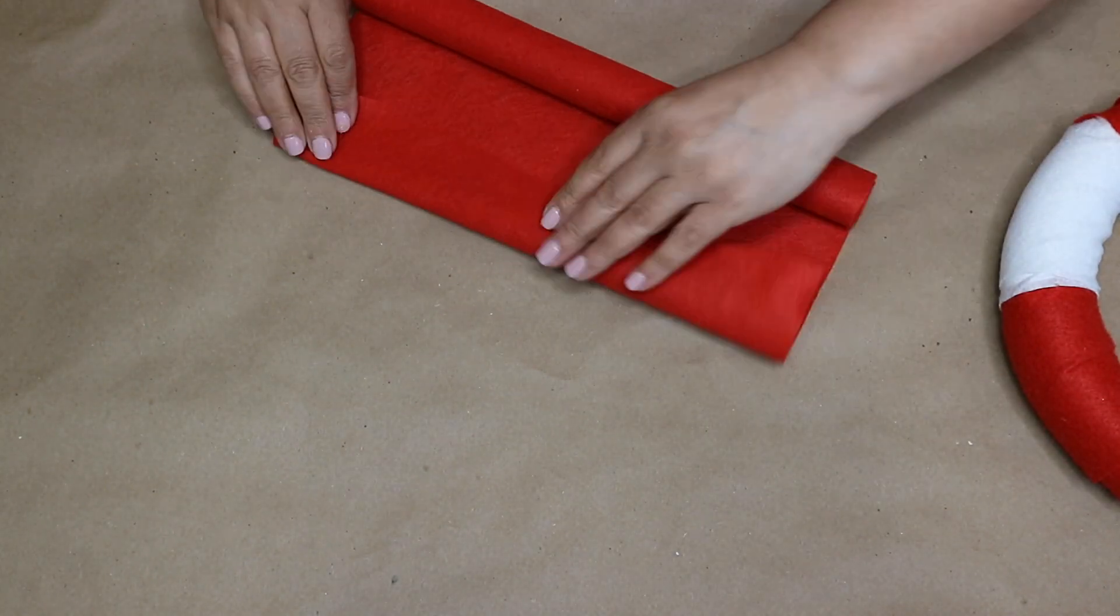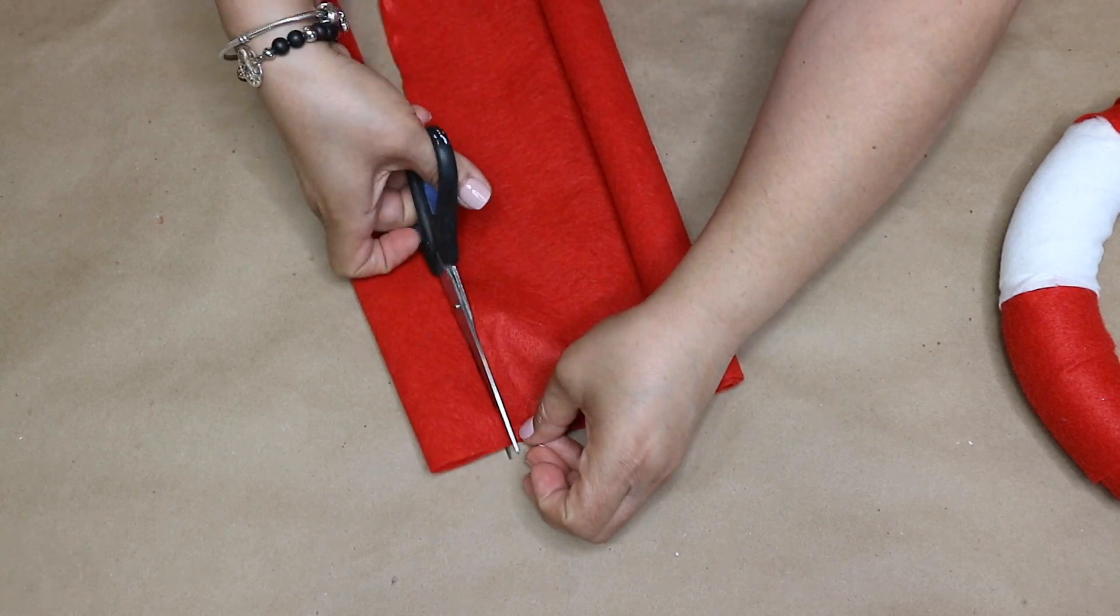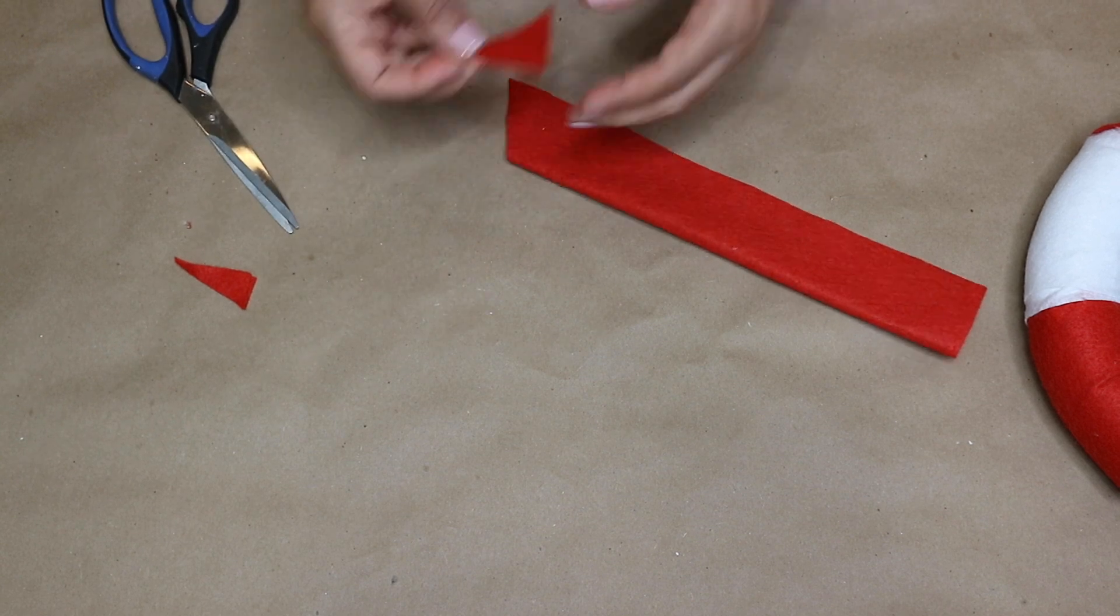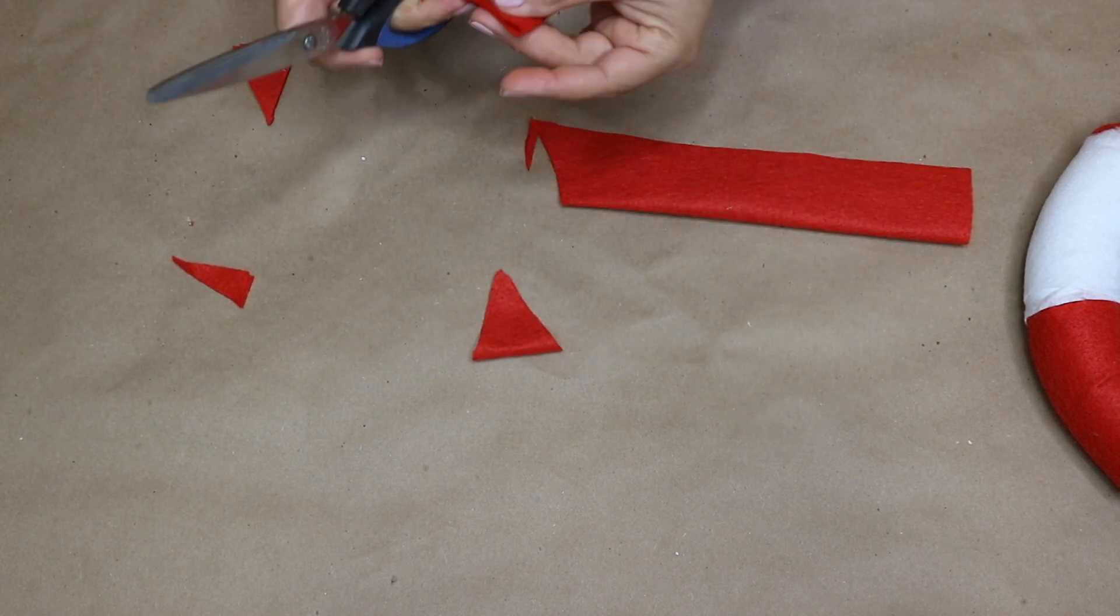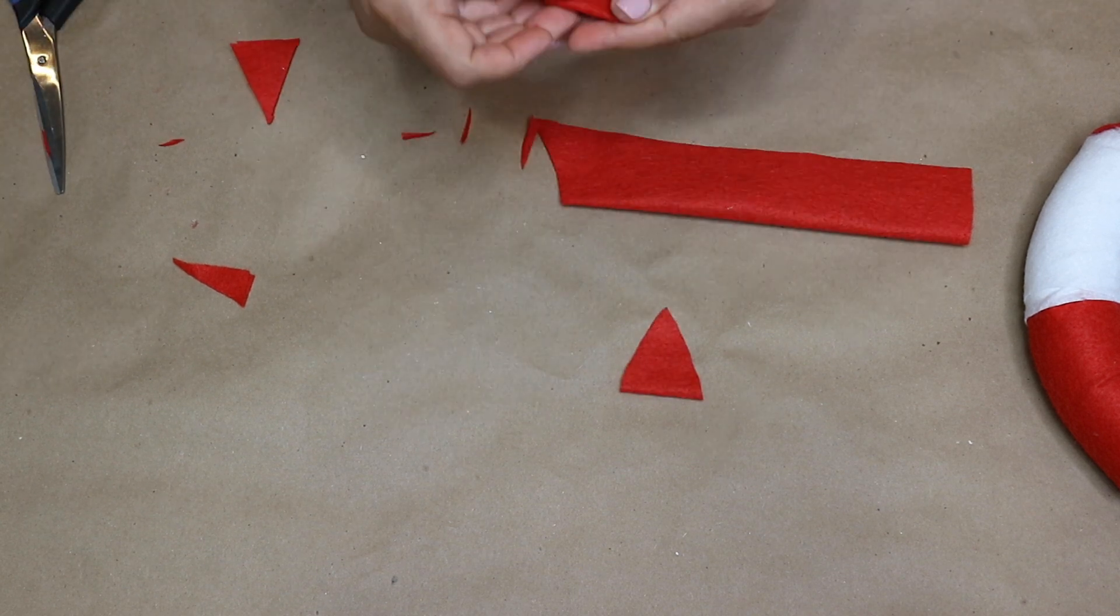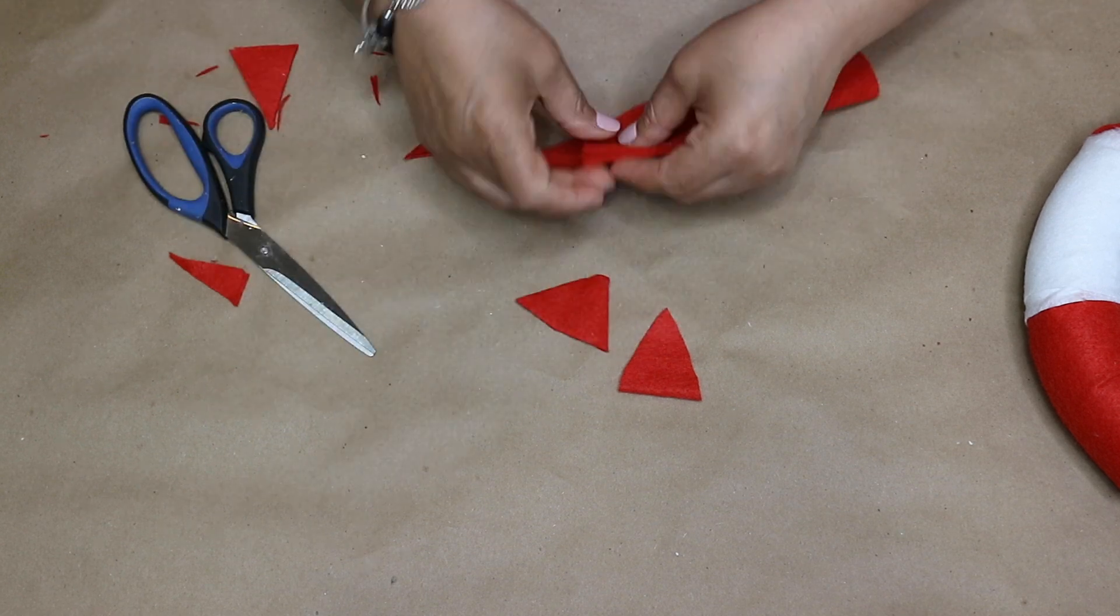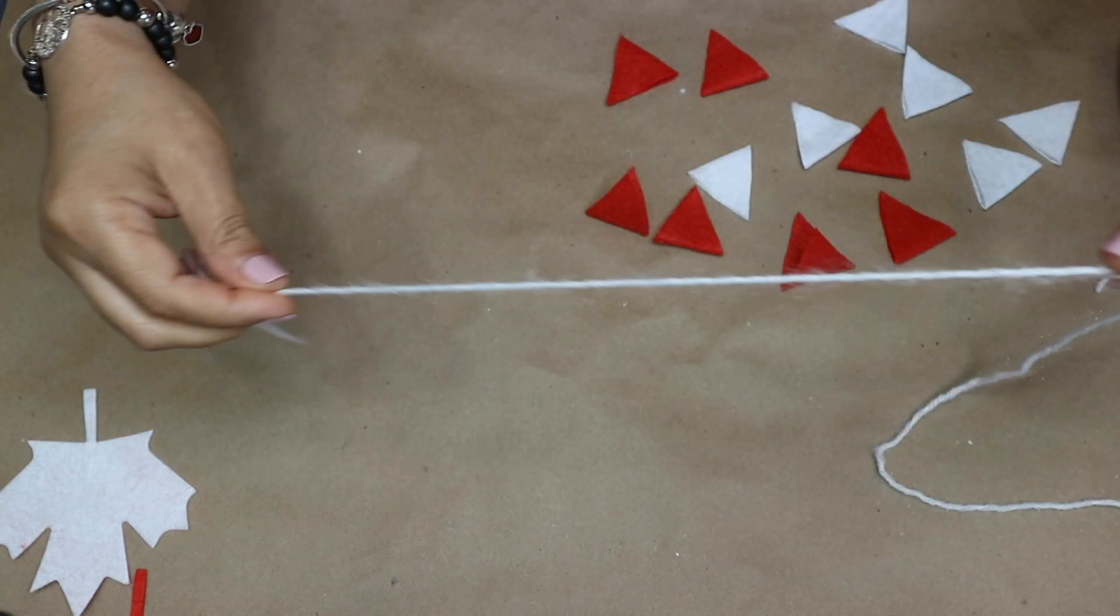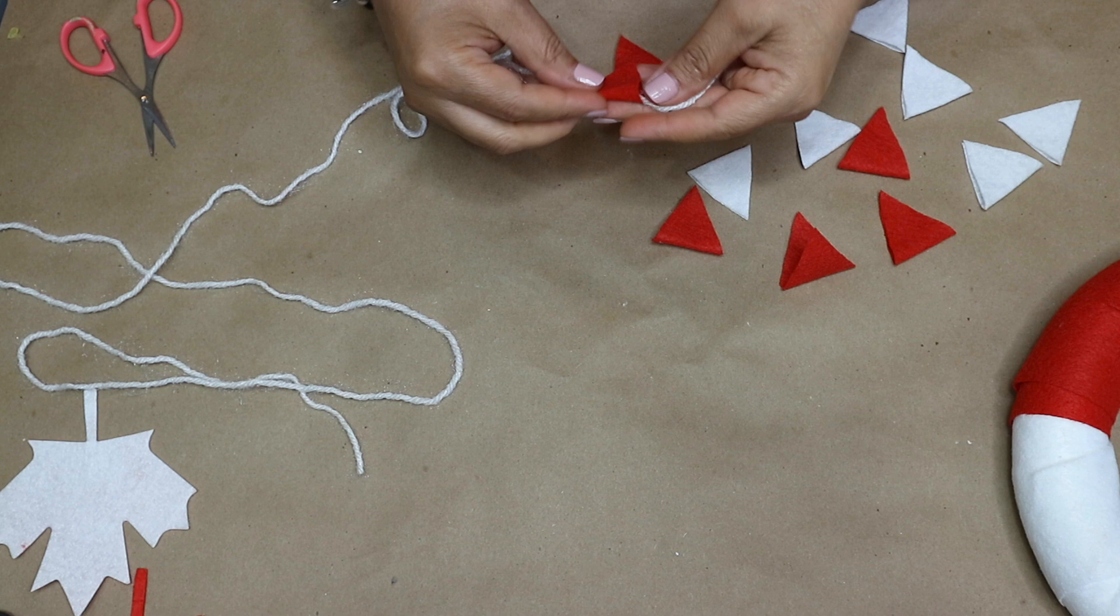Next I'm going to make some mini banners. So I fold the felt about one inch and then I cut it. Then I cut it in triangle shapes as you see me doing. I will also do same thing on the white felt as well. Next I bring some white yarn and I start hot gluing these banners on the yarn.